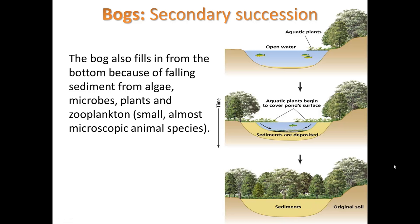So we've seen the difference between primary succession, where you have to replace the soil and the plants, and secondary succession, where you only have to replace the plants. We've seen specific examples: forest fires as secondary succession, dunes as secondary succession, and bogs as secondary succession. Make sure you read the assigned pages from the book — we're going to do some more investigation of this tomorrow. Okay scholars, thank you for tuning in.